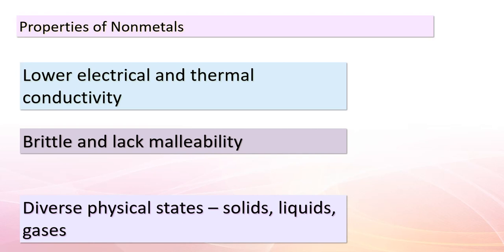Non-metals are equally captivating with their distinctive set of characteristics. Unlike metals, non-metals are generally poor conductors of both electricity and heat. Non-metals also tend to be brittle, easily shattering when subjected to force — in contrast to the malleability of metals. They are versatile in terms of physical states, existing as solids, liquids, or gases. An interesting pattern emerges: non-metals often gain electrons during chemical reactions, forming negatively charged ions known as anions.